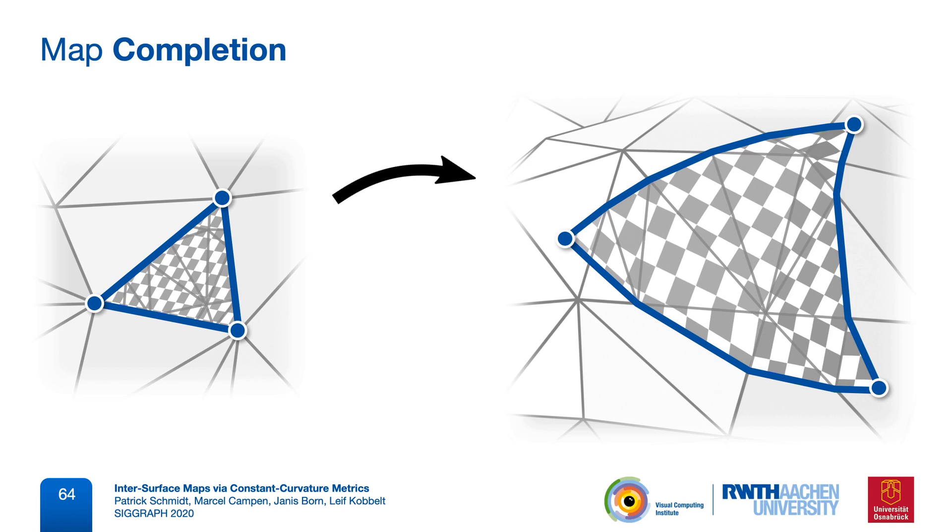And this common tessellation has a lot of benefits. Map evaluation is very easy, and it allows us to transfer a wide range of data. For example, textures with seams, because the seam edges of the source mesh are now also present on the target mesh. And this is something that many other methods cannot do. On the downside, the number of elements in our tessellation is larger than in the input models, and triangles can be badly shaped. But, depending on the use case, we could coarsen the mesh again, while still preserving bijectivity.